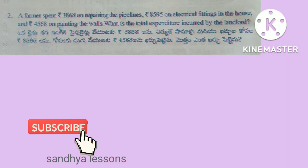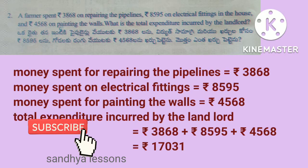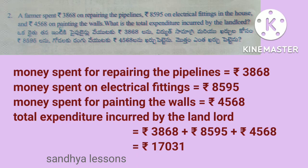Problem 2: A farmer spent Rs. 3,868 on repairing the pipelines, Rs. 8,595 on electrical fittings in the house and Rs. 4,568 on painting the walls. What is the total expenditure incurred by the landlord?